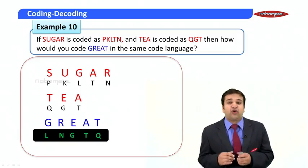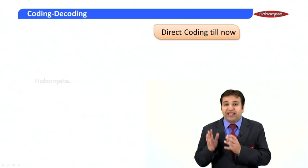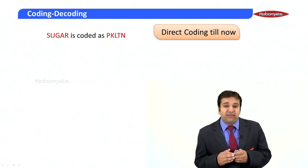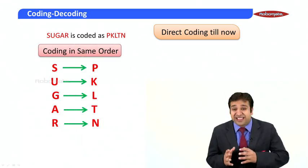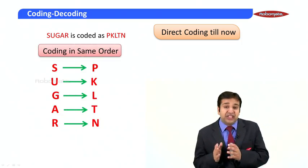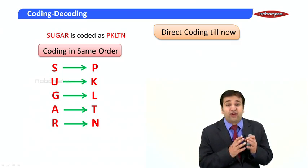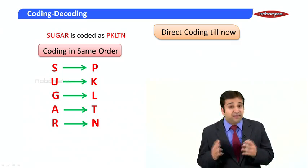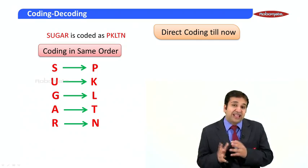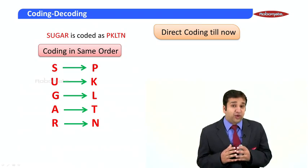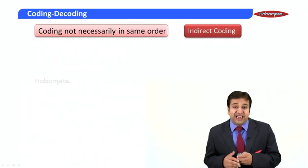I think you have got the gist of basic coding and decoding. Direct coding means if 'sugar' is coded as 'pkltn', we consider the coding in the same order: s is p, u is k, g is l, a is t, and r is n. This was only for practice — it may not always be the case. We will have to analyze the question to determine whether it is direct coding or indirect coding, as indirect coding questions appear frequently.